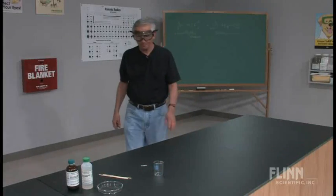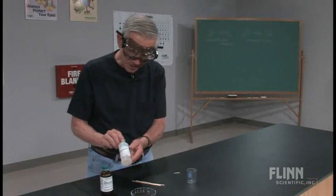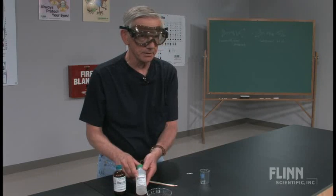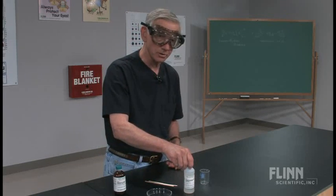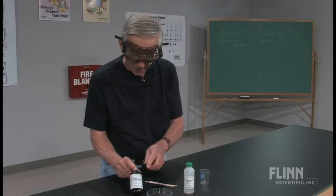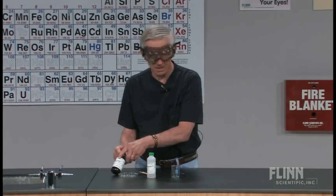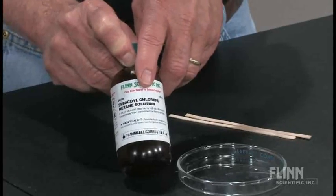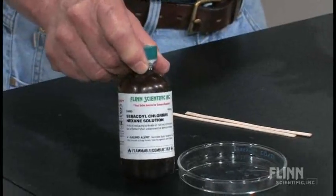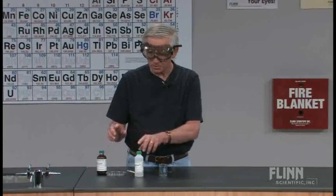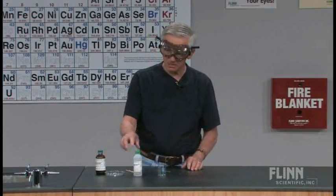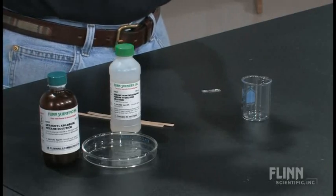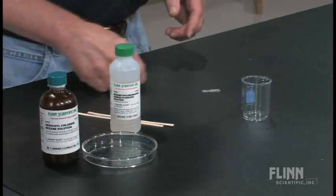So what I'm going to do is take the hexamethylene diamine solution — it's in aqueous sodium hydroxide, so this is a water-based solution. Here's the acid chloride of sebacic acid, a sebacoyl chloride. It's in hexane, which is a relatively low density organic liquid. It's also water-immiscible, so if I put both of these in the same beaker, the water solution is going to be on the bottom, the hexane solution is going to be on top, and the reaction is going to take place at the interface.